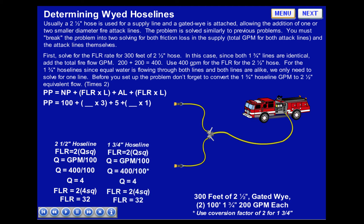For the 1¾-inch attack lines, FLR equals 2Q squared, Q equals GPM over 100. In this case, Q equals 400 divided by 100, because we take the original 200 GPM and multiply it by 2 — the conversion rate for 1¾-inch hose. So FLR equals 2 times 4 squared, which equals 32.